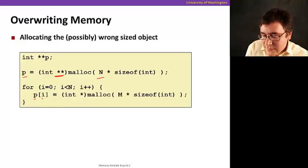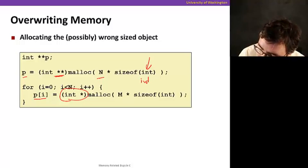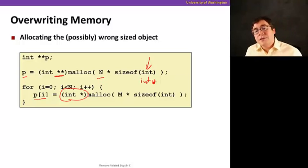So, but later here, I'm going to assign to p of i another pointer, but look at what I allocated here. It's an int as opposed to an int star. Bad, right?